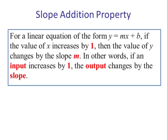Slope Addition Property: For a linear equation of the form y equals mx plus b, if the value of x changes by 1, then the value of y changes by the slope m. Now you've got to remember m is going to be a number. In other words, if an input increases by 1, the output changes by the slope.